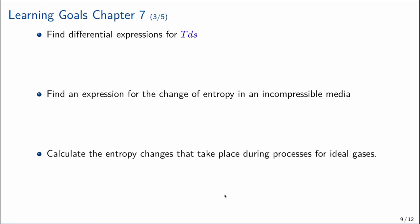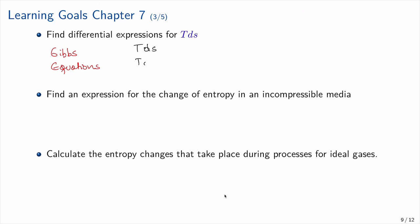We need to find the differential expressions for TdS, known as the Gibbs equations. There are two: the first is TdS = dU + P dV, and the second is TdS = dH − V dP. In the first case, internal energy and P dV appear; in the second, enthalpy and V dP appear — the terms are swapped between the two equations.